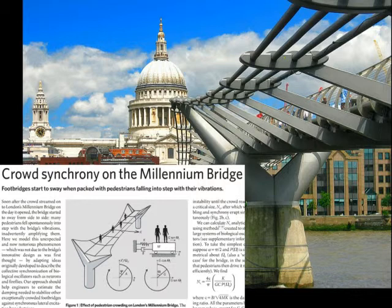This is a fairly recent engineering example of where some of the circular functions calculations went a little awry. This is the Millennium Footbridge in London. It was built to be opened in the year 2000 as a celebration of the Millennium. When they opened the bridge, they noticed there was quite a bit of sway. It's a suspension bridge and they're meant to sway — that's part of what allows them flexibility so they won't break in high winds. But the sway was quite significant.